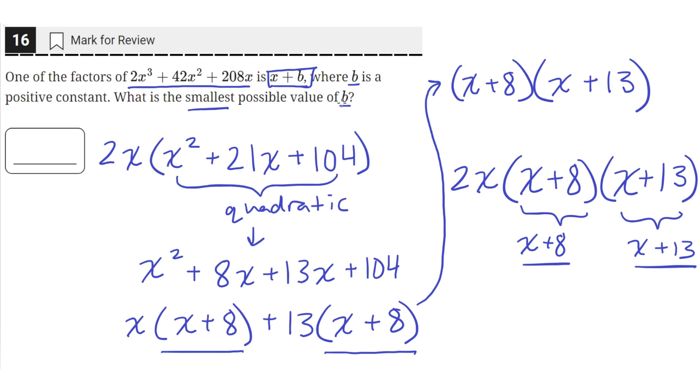So here we have x plus 8 as a factor and x plus 13. And the question asks us for the smallest possible value of b. So b can either be 8 or b can either be 13. But we need the smallest possible value of b. So we'll choose 8 as our answer. So the answer is 8 for the smallest possible value of b.